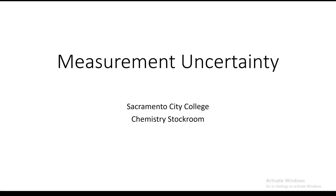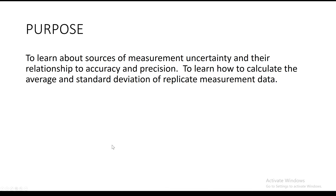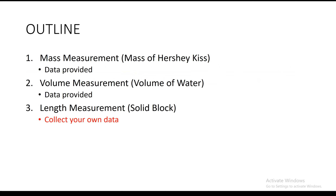Hi guys, welcome to the first virtual lab of CHEM 300. This week we will be working on the measurement and uncertainty lab. The purpose of this lab is for you to learn how to make scientific measurements using the rule of significant figures and be able to report where the uncertainty exists in your own measurement. You will also learn how to calculate the average and the standard deviation and how we can use those to quantitatively describe your precision and accuracy.